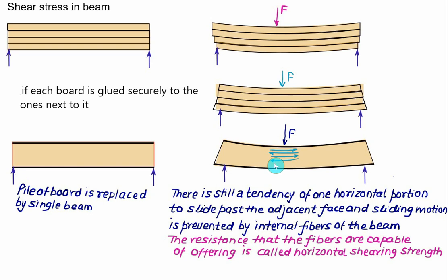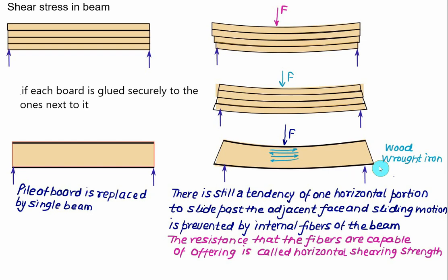Fibrous materials such as wood or wrought iron are more likely to fail in horizontal shear than materials that have no natural internal cleavage surface. Timber has a very low value of shearing strength parallel to the grain, and hence a short beam tends to fail from horizontal shear rather than from bending. So instead of bending failure, shear failure governs in the case of timber.